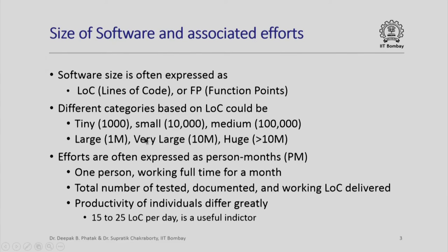In order to build software of differing size, you would need to estimate how many people are required to build that software. People's effort is often expressed in terms of person months. A person month is usually how much one person working full time for a month can develop and deliver. Please note that it is not just the count of lines of code that one can write in a month — many of you can write even 500 lines of code in a single day.